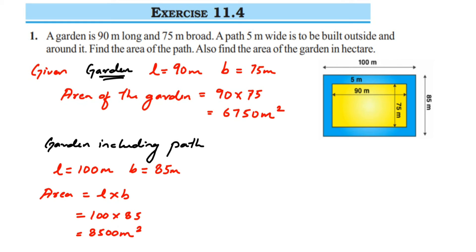Now we're going to find out the area of the path. The area of the path equals the area of the garden including path minus the area of the garden. Since the area of garden including path is greater than the area of the garden, we subtract accordingly.